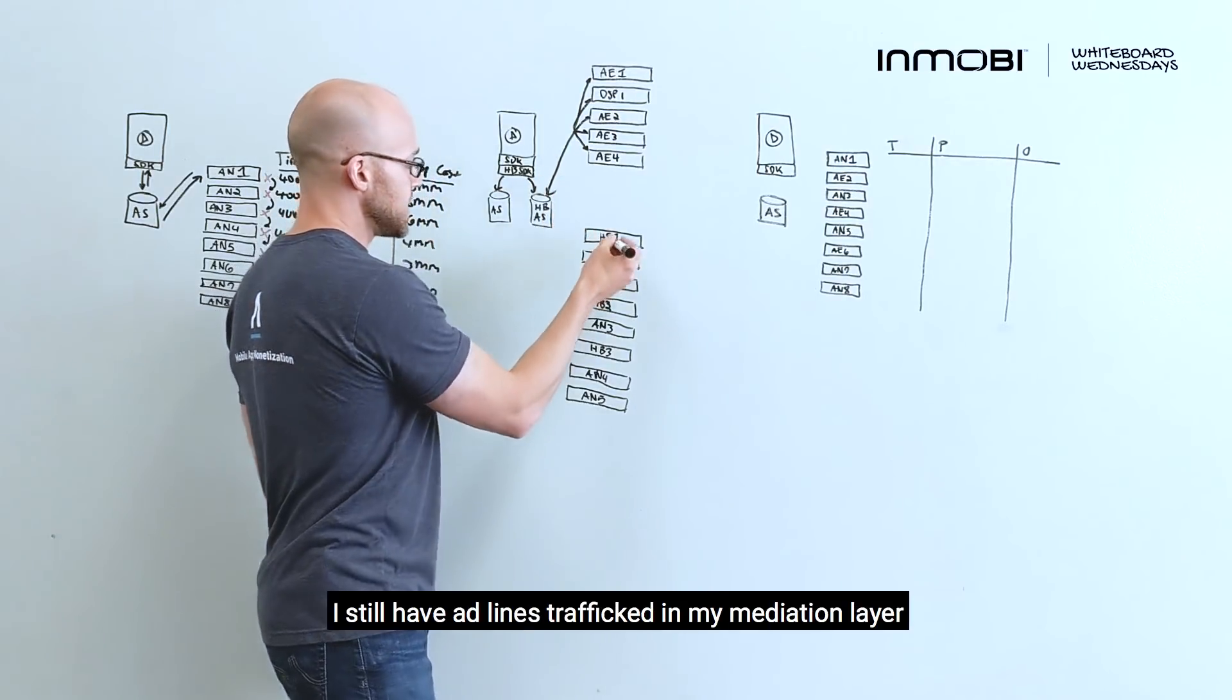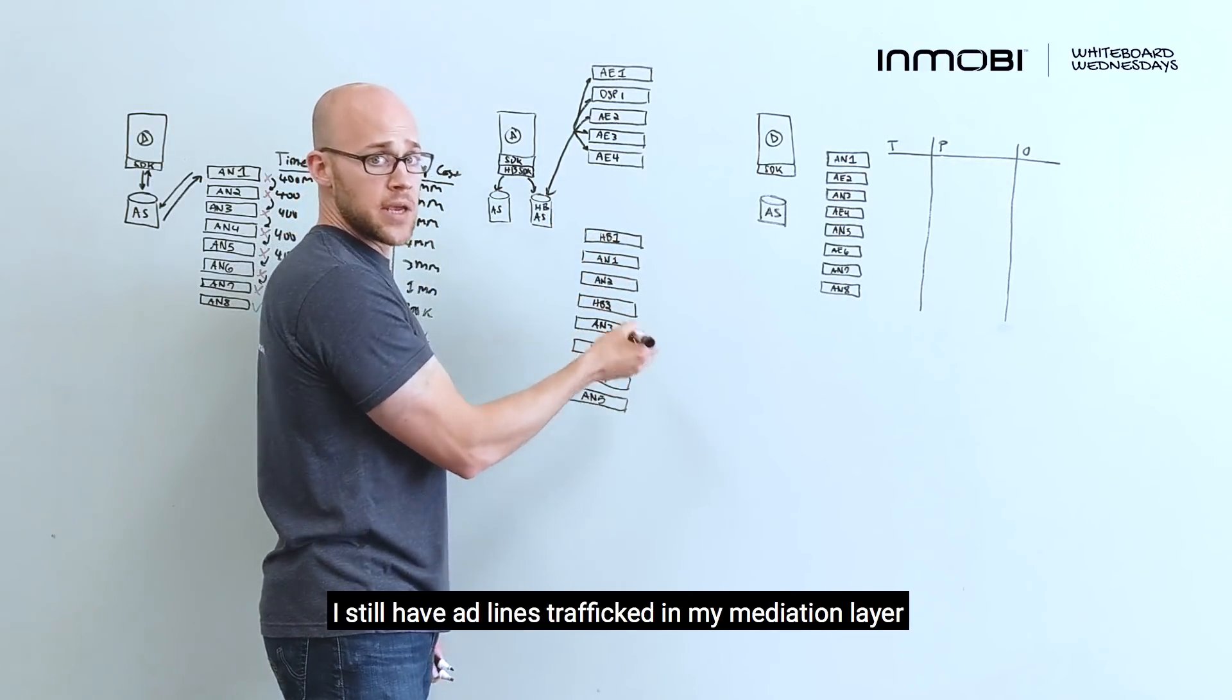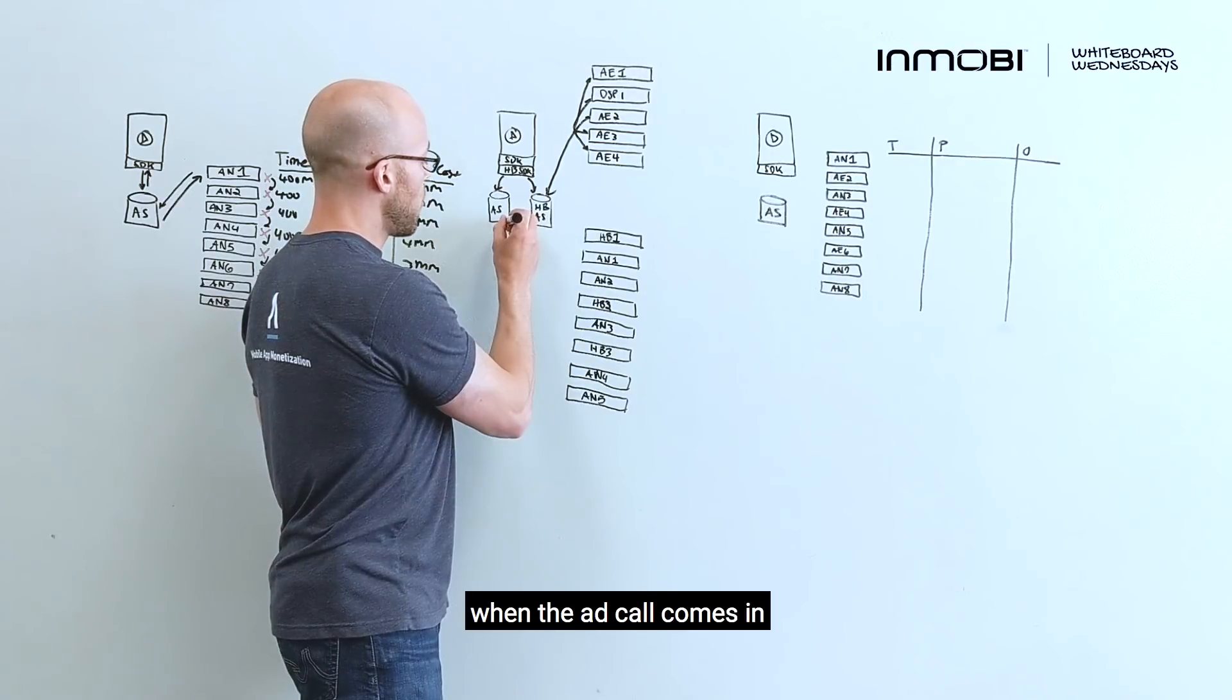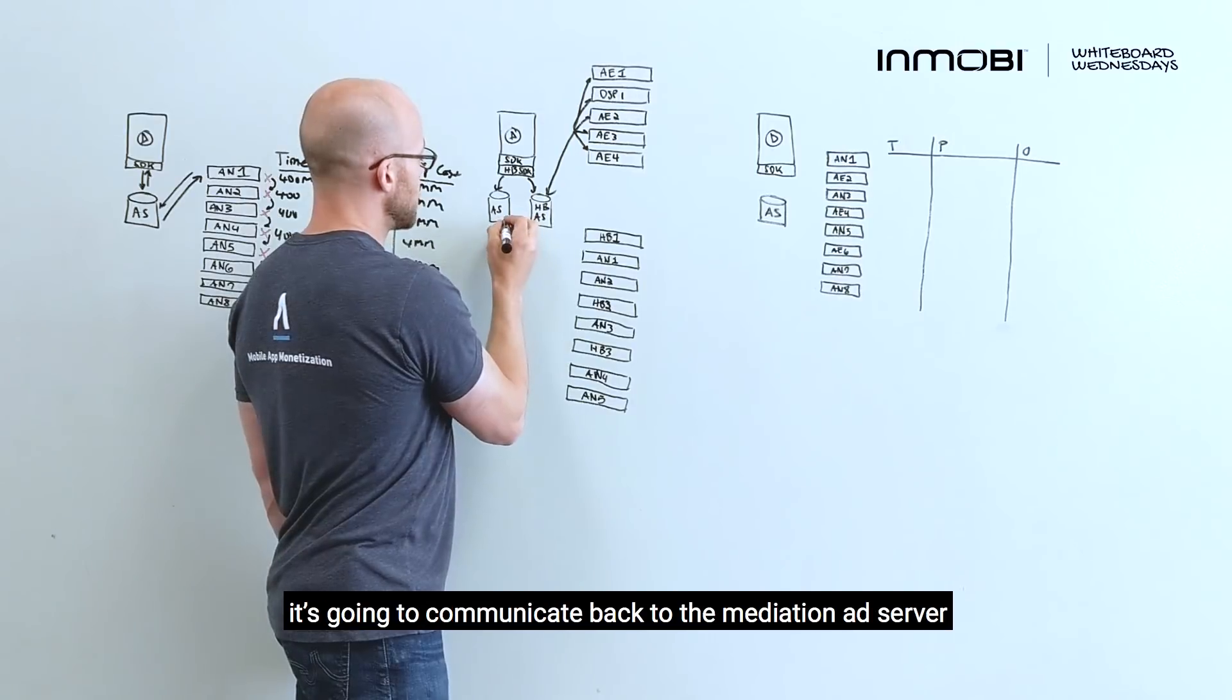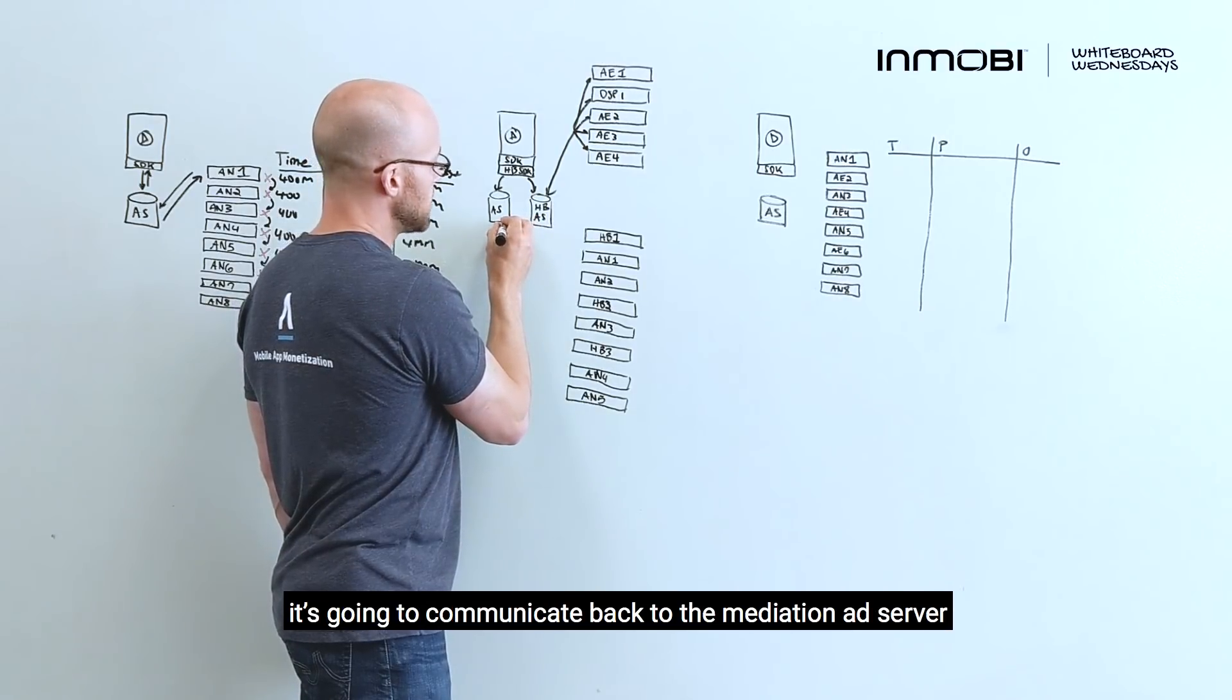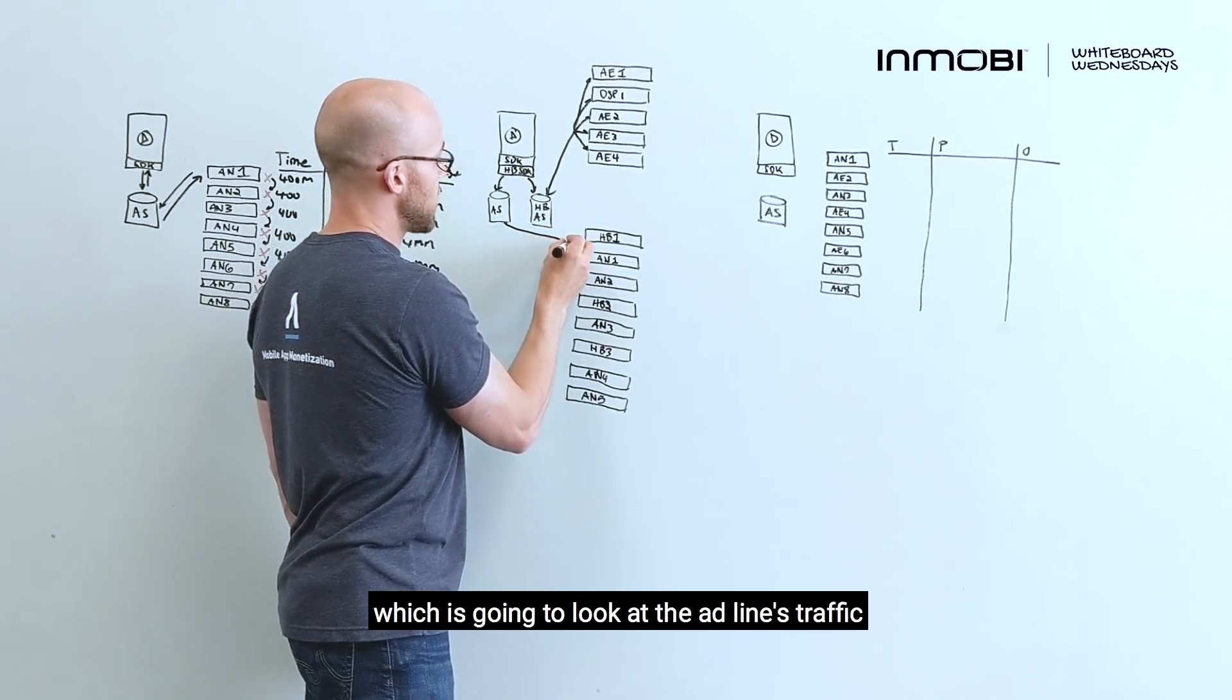At the same time, I still have ad lines trafficked in my mediation layer. And so, when the ad call comes in, it's going to grab a bid from the header bidding partner, it's going to communicate back to the mediation ad server, which is going to look at the ad lines traffic.